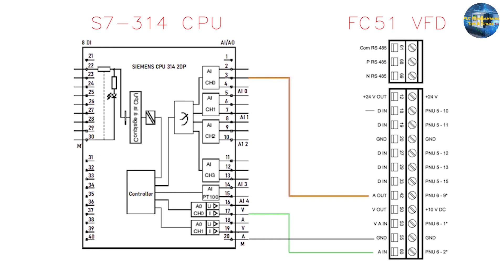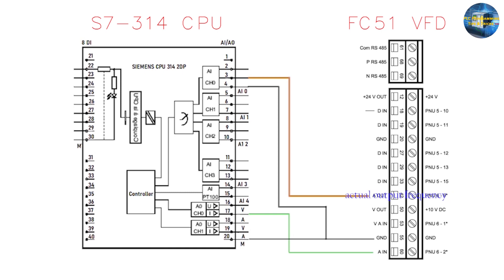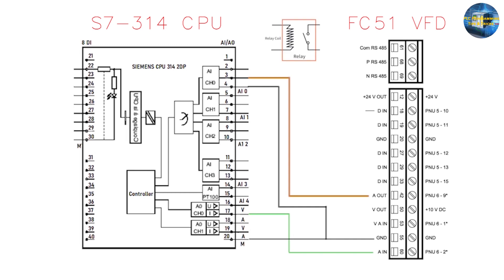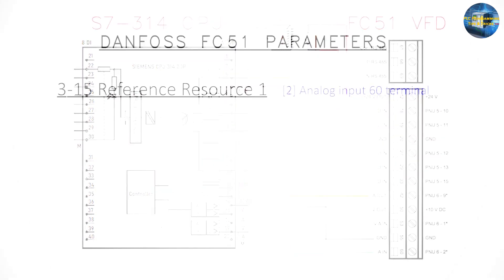Next we will connect terminal 42, the analog output of the VFD, to the analog input channel 0 of the PLC at terminal number 3. The VFD will send the analog output signal — for example, the actual output frequency — to channel 0 of the PLC. Next we will use a relay to activate the run command of the VFD. This relay can be turned on by the Q0.0 output signal of the PLC.